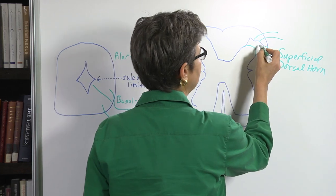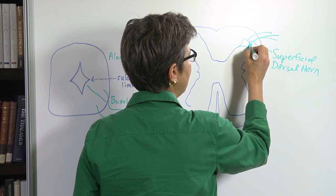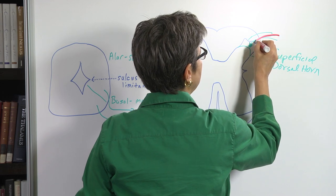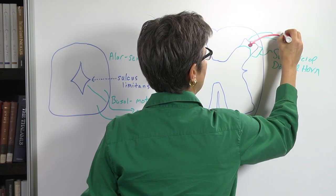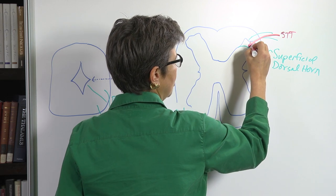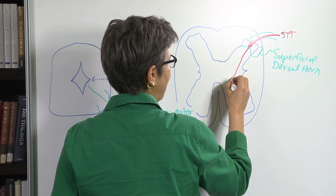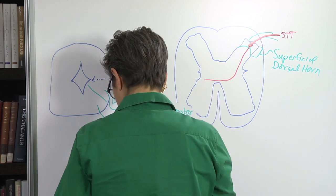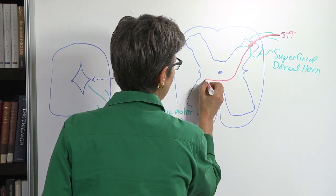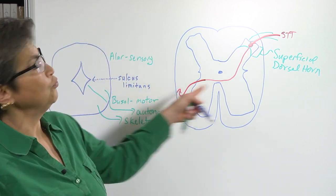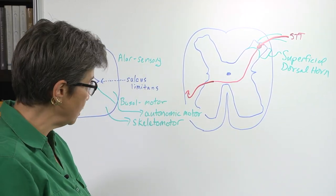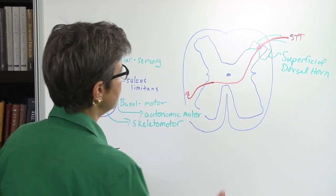It is here that the spinothalamic tract information comes in and synapses. Apologies to the colorblind people in this audience. So here is the spinothalamic tract pathway. It's going to come in, synapse on a neuron here in the superficial dorsal horn, which is going to send its axon across ventral to the central canal, clogged up central canal, and this axon is going to then shoot forward right here in what's called the ventral lateral quadrant. So this is critical for pain and temperature.